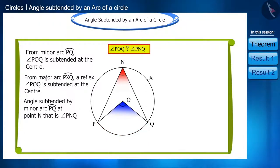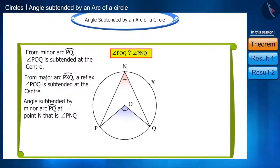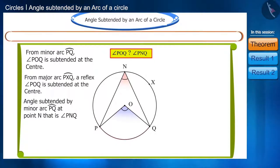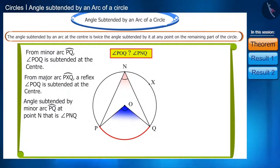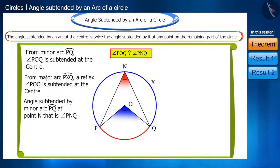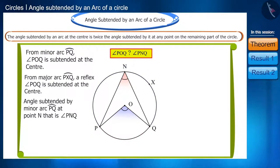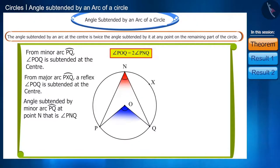There is a theorem related to this question which says: the angle subtended by an arc at the center is twice the angle subtended by it at any point on the remaining part of the circle. According to this theorem, we can say that angle POQ will be twice the angle PNQ.